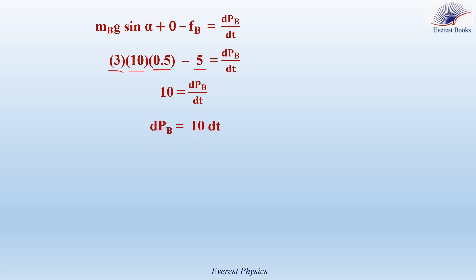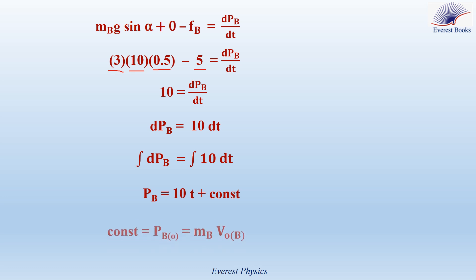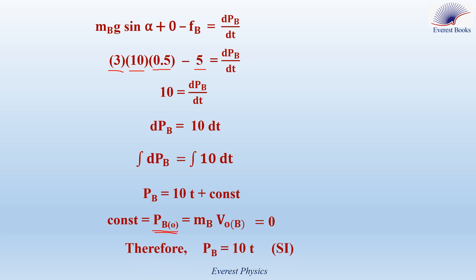Rearranging: dPb equals 10 dt. Taking the antiderivative of both sides gives Pb equals 10t plus a constant. This constant is the initial algebraic value of the linear momentum of B. Since B is released from rest, this constant is 0. Finally, Pb equals 10t.